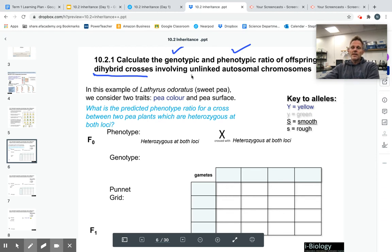The important thing is that these genes are unlinked, which means they're not on the same chromosome, and they're autosomal, which means they're not on the X or Y chromosomes.